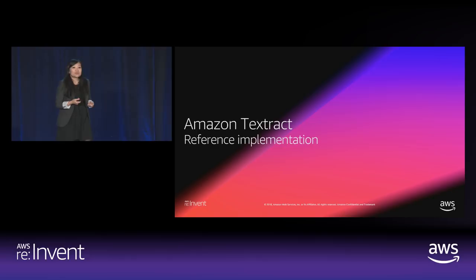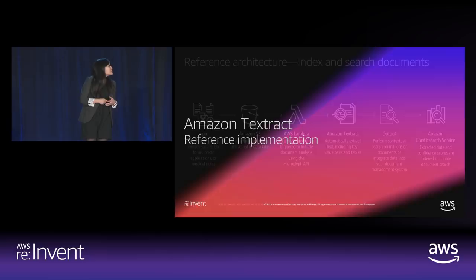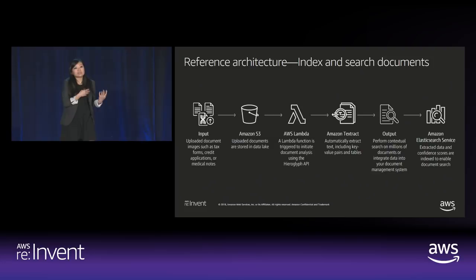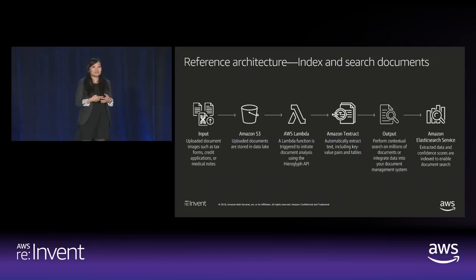Let me walk through a few reference implementations for common use cases. The classic text extraction use case is index and search: you can use a Lambda function or batch processing, call documents already stored in S3, run them through Amazon Textract, get the text, send it to Elasticsearch, and be able to search millions of documents quite quickly.